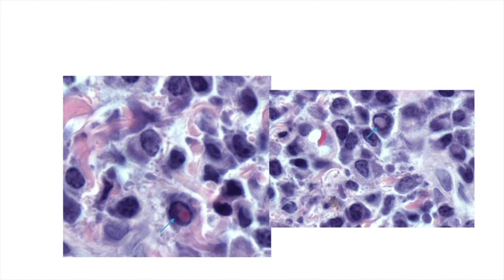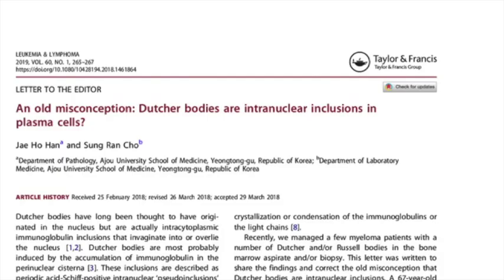When you see similar inclusions overlying the nucleus — that is, intranuclear inclusions — you call them Dutcher bodies. Dutcher bodies have long been thought to originate from the nucleus, but recent studies have shown that they are in fact intracytoplasmic inclusions that invaginate into or overlie the nucleus.